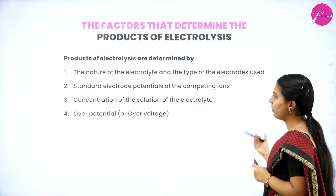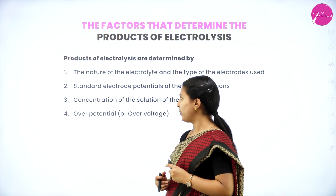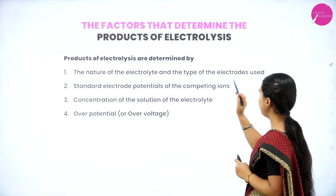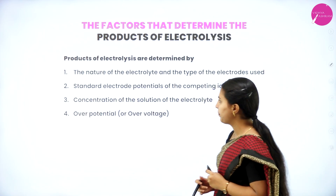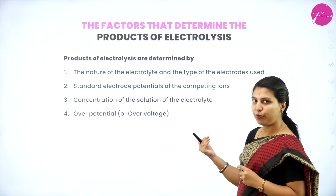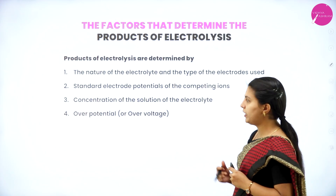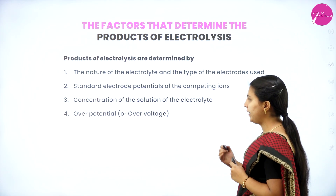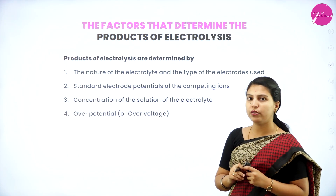Next, the factors that determine the products of electrolysis. There are four major factors: (1) the nature of the electrolyte and the type of electrodes used, (2) standard electrode potentials of the competing ions, (3) concentration of the solution of the electrolyte, and (4) over potential. These are the four factors that affect the products of electrolysis.